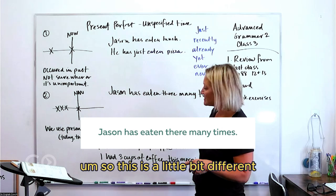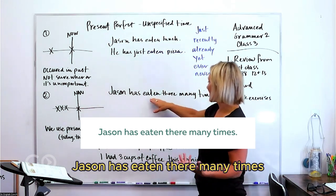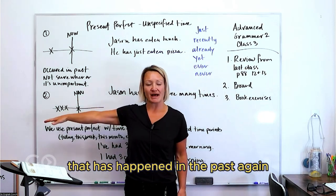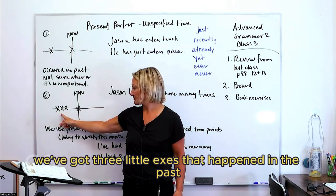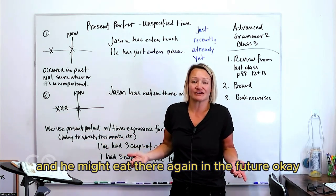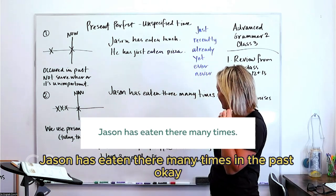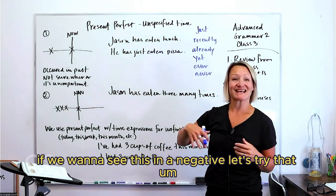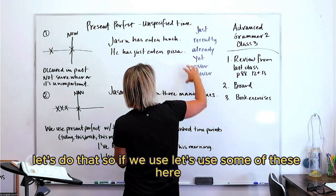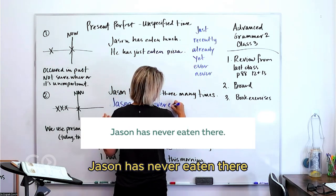This is a slightly different usage. 'Jason has eaten there many times' — we're talking about something that has happened again and again in the past. There are multiple instances in the past and he might eat there again in the future. So we use the present perfect to express repeated past actions: 'Jason has eaten there many times.'